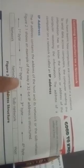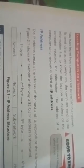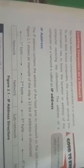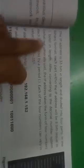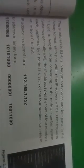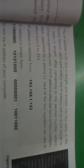Figure 2.1 shows an example of the way a 32-bit IP address is structured. IP पते में host का पता होता है, जो sub-network का network है. The IP address is 32 bits in length and divided into 4 parts — इसको 4 parts में divide किया है.